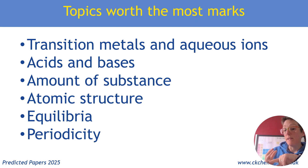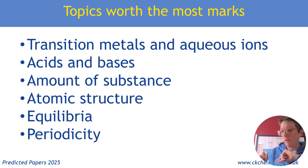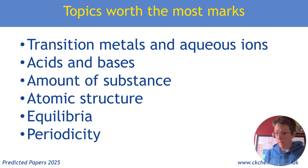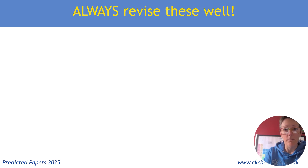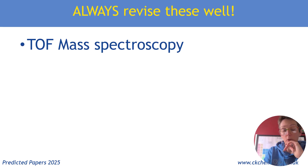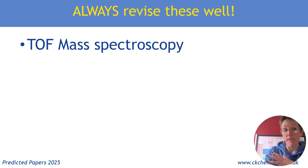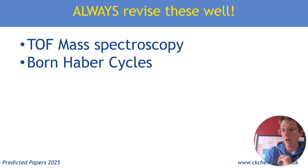Periodicity means period three elements, and it also means group two and group seven. Group two in particular comes up a lot. Always, time of flight mass spectroscopy comes up every single time, as do Born-Haber cycles. Make sure you are confident with those. The good thing about both is that they are relatively predictable topics, so if you do lots of past paper practice you should be able to get to grips with them.